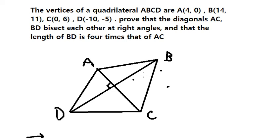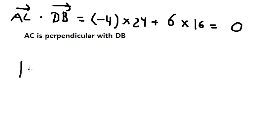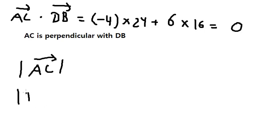The length of BD is four times that of AC. So we just use the magnitude of vector AC and vector DB.